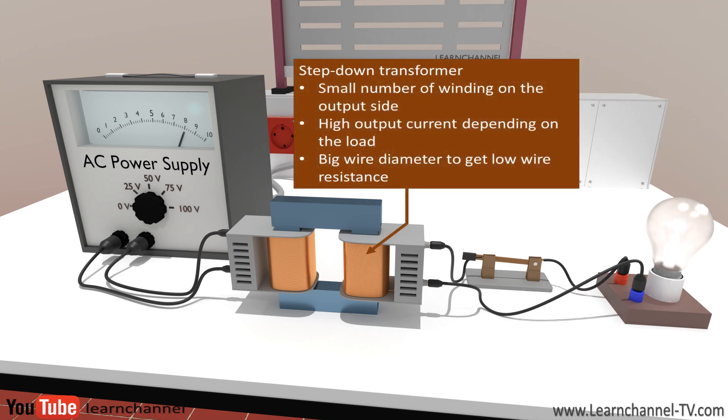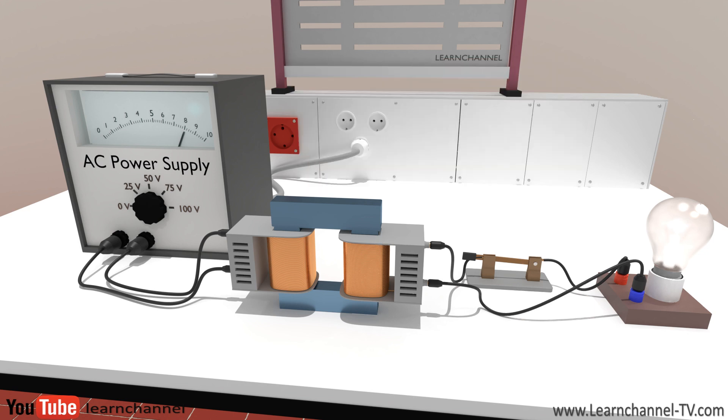We should mention at this point that the secondary winding of a step-down transformer has a bigger wire diameter than the primary winding, because you need low wire resistance for the high current you can get at the output, and vice versa, a small diameter for the secondary winding when you have a step-up transformer.